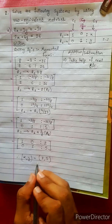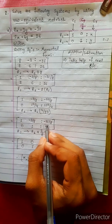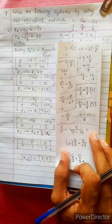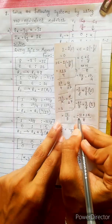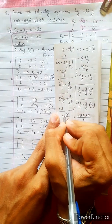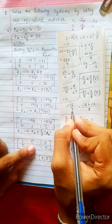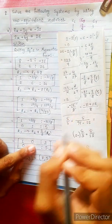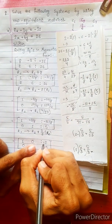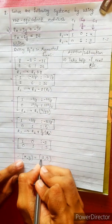Let's check: minus 2, 31 by 8 — we're going to verify. Minus 31 plus 15 is 16. Minus 16 by 8 is minus 2.